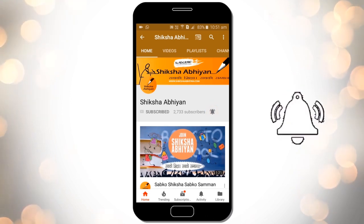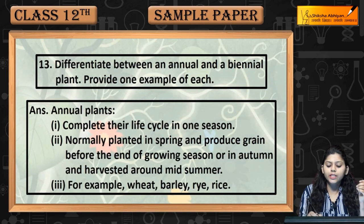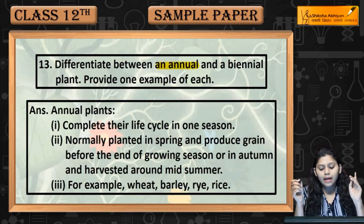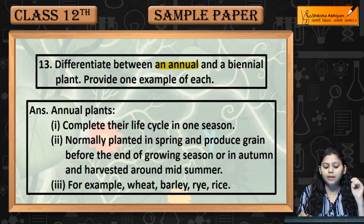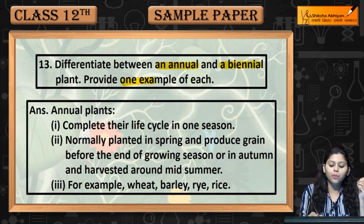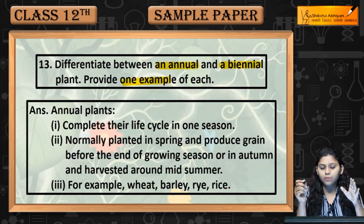Question number 13: Differentiate between an annual and a biennial plant, and provide one example of each. Starting with annual plants.